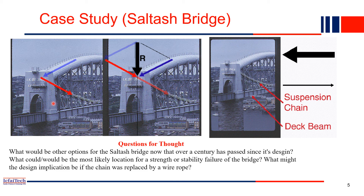Here are some questions for thought. This bridge is approximately 100 years old. What are the other options to manage this horizontal force? One option is the installed arch to take care of the extra horizontal force — but what could be another alternative? Also, what would be the most likely location for a strength or stability failure of the bridge? Please give it a thought and let me know in the next class or in the comment section.